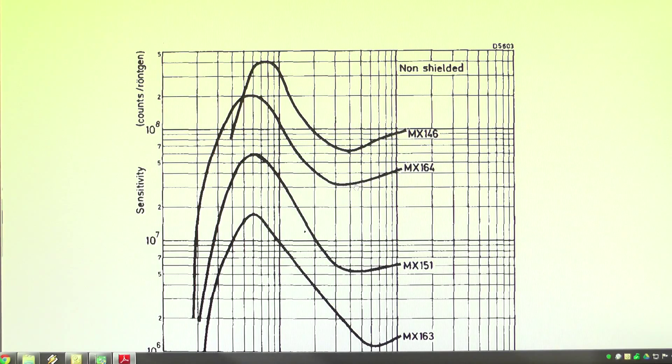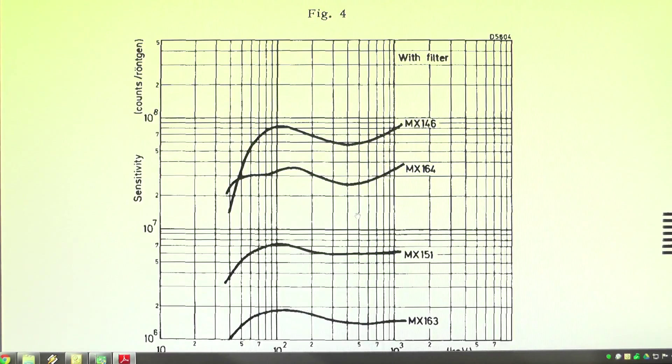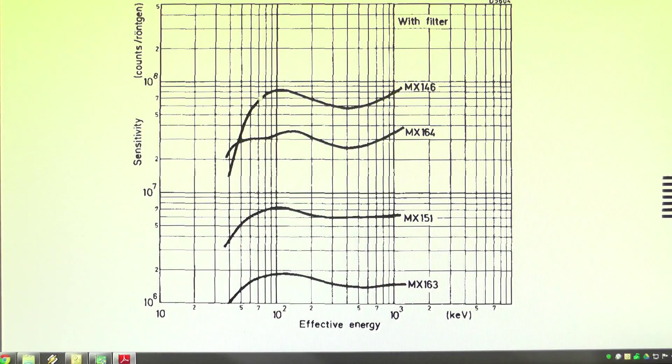Now it's got some example graphs here. We don't actually have the tube I have in this which is the MX145. But we can clearly see that between these four different tubes the profile is pretty similar just at different amplitudes. So this is non-shielded. And then when you have the shielding on you get a much flatter energy response from the tube.